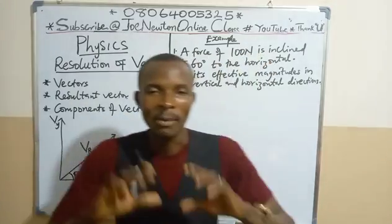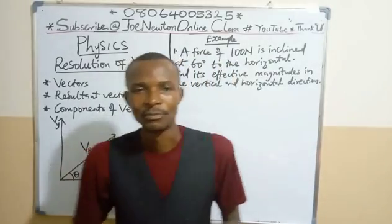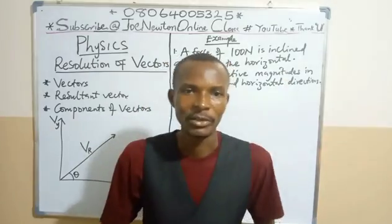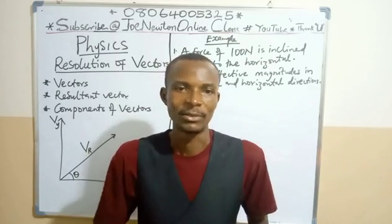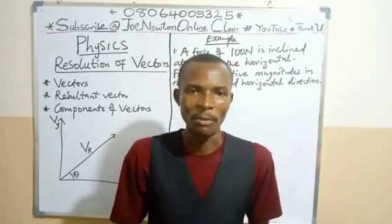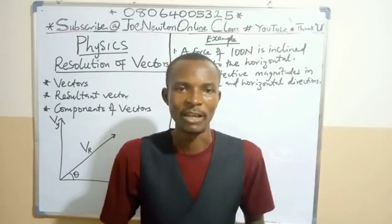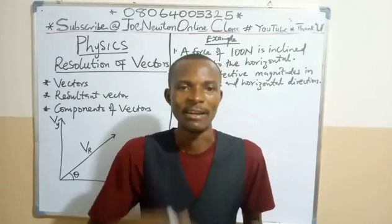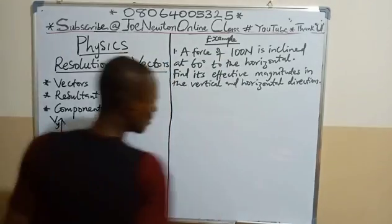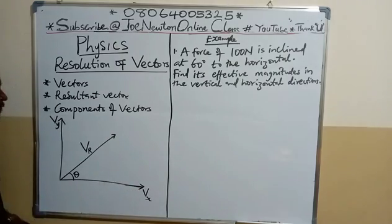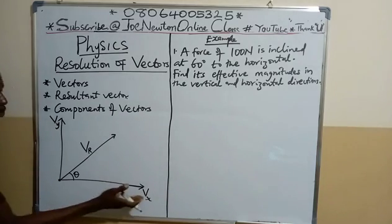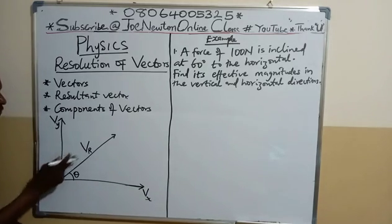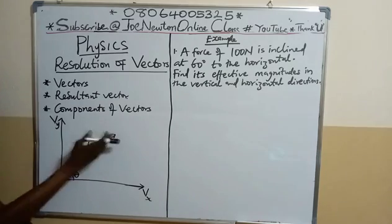What do we mean by component of vectors? By component of vectors, we mean the effective values of vectors in both the vertical direction and the horizontal direction. This gives rise to the horizontal component of a vector and the vertical component of a vector. Looking at the diagram on the board, this represents a vector acting at a point. This is the horizontal component on the x-axis, and this is the vertical component. V represents the vector, with Vy and Vx as its components, and Vr as the resultant of these two vectors.